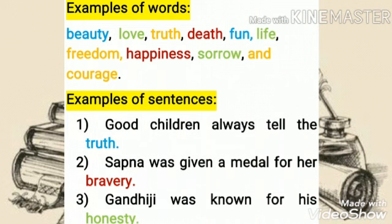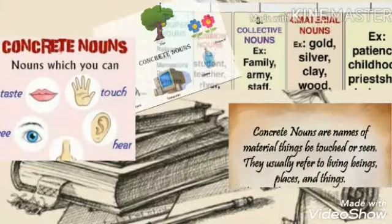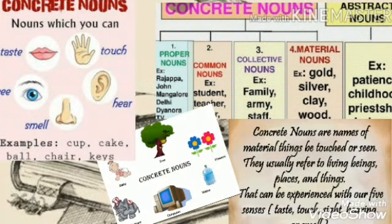Can you understand? Truth — we can't see or touch it, we can only feel it. And the same for bravery and honesty. Concrete nouns are names of material things that can be touched or seen. They usually refer to living beings, places and things that we can experience with our five senses. This is the speciality of concrete nouns.